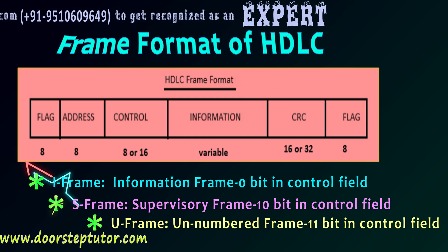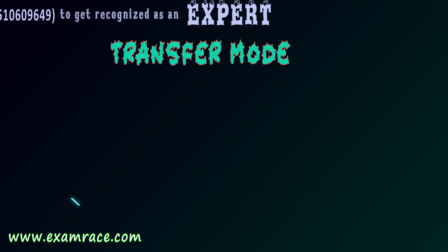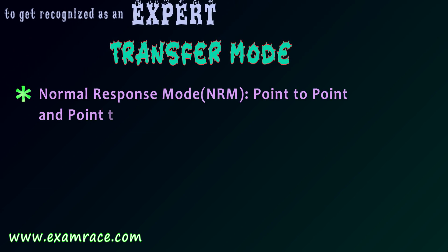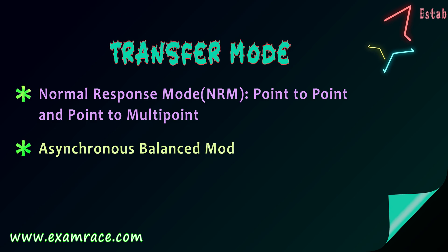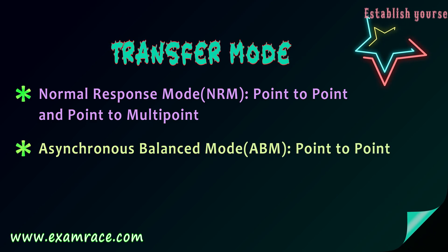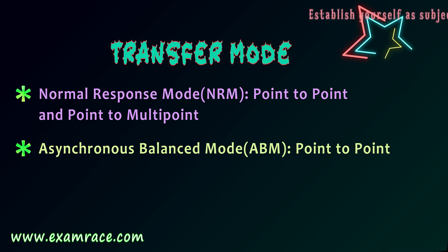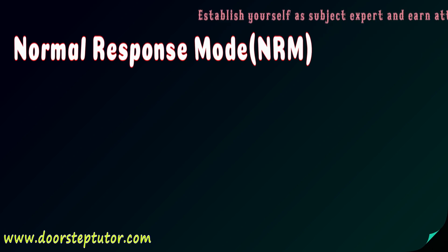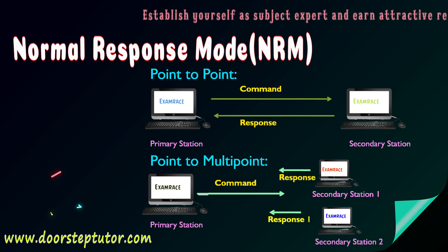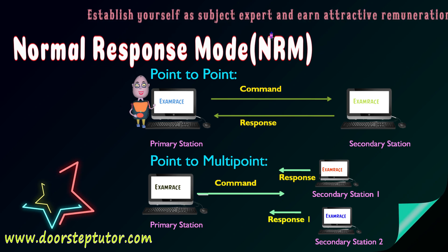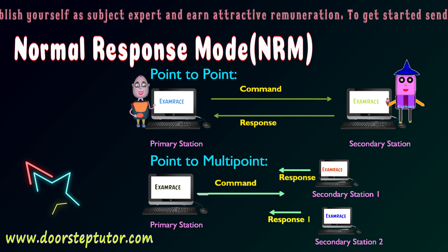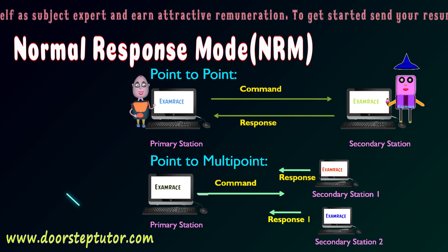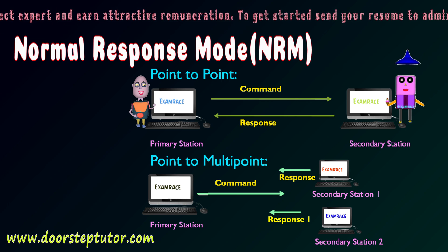The transfer modes in HDLC are: Normal Response Mode (NRM) and Asynchronous Balanced Mode (ABM). Under NRM, the first type is point-to-point, which means one workstation on the sender side (primary station) communicates with one workstation on the receiver side (secondary station). The primary station sends commands and the secondary station responds.